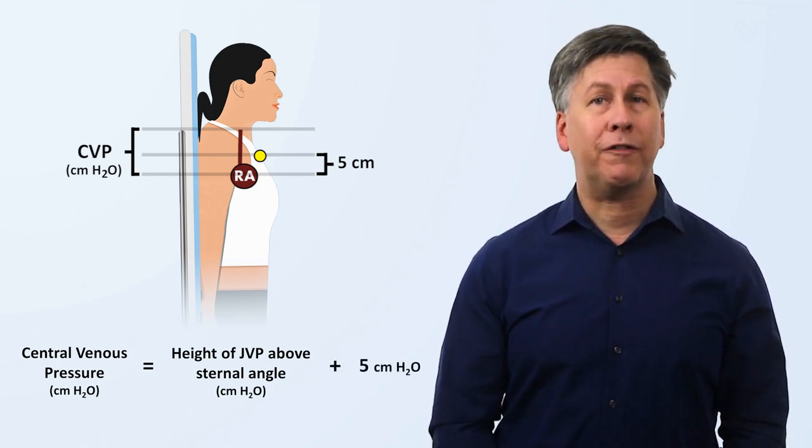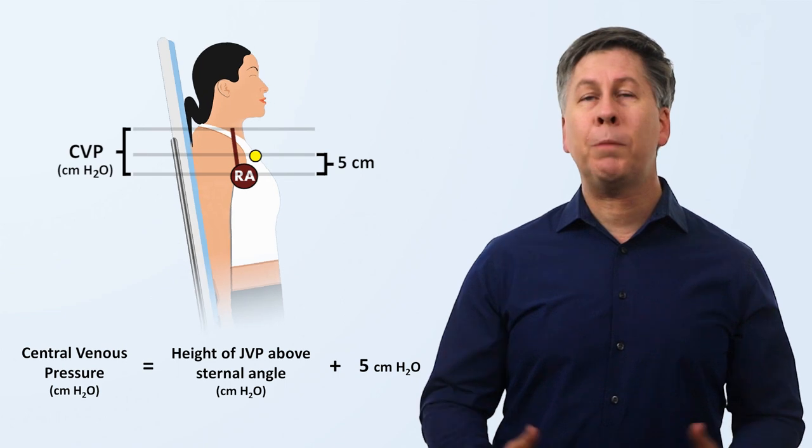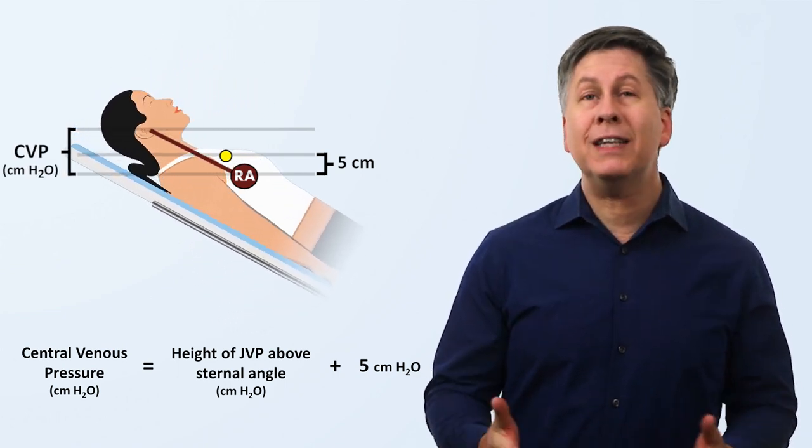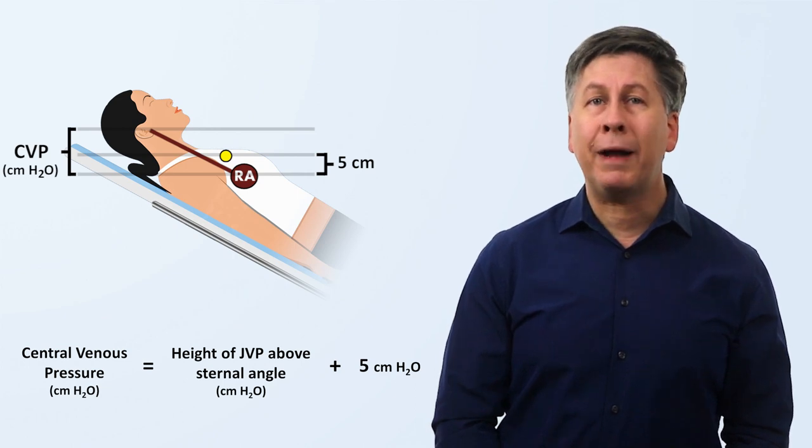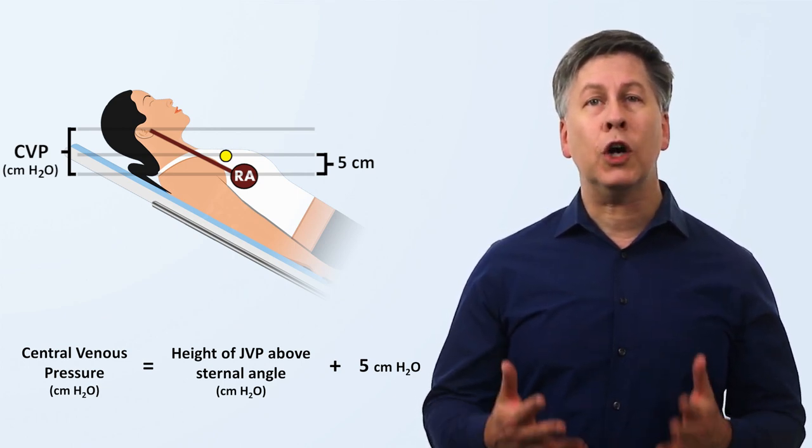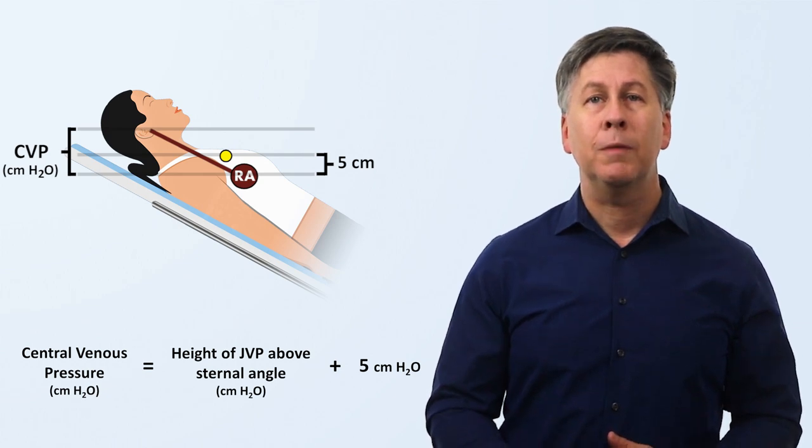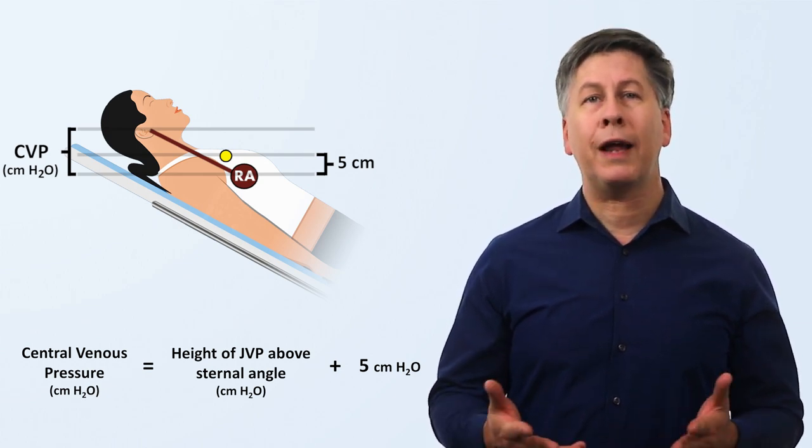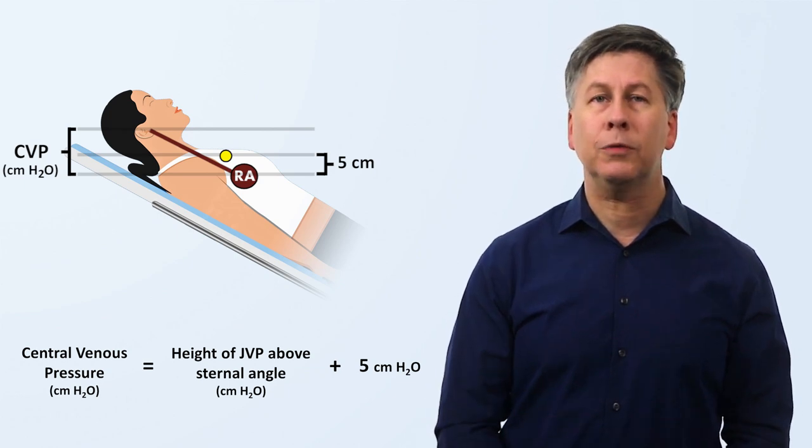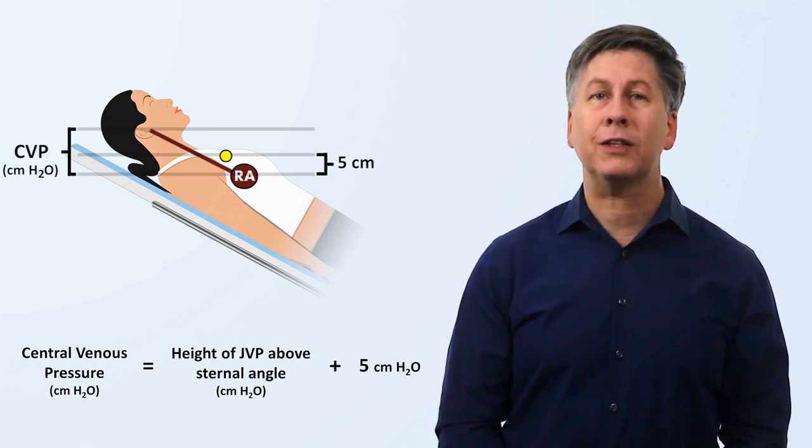In those patients who are unable to sit fully upright, or if the JVP is not visible when a patient is fully upright, the method stays the same. It doesn't matter what angle the patient is at. All that matters is the vertical distance to which the jugular vein's distension extends, though this requires the assumption that the right atrium will still be five centimeters closer to earth than the sternal angle, irrespective of what inclination the patient is at.